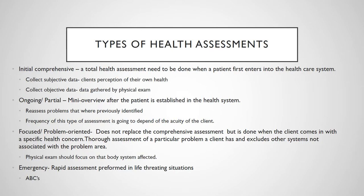Now the different types of health assessments — this is important and will definitely show up on your test, where you'll be given an example and need to identify the type. An initial comprehensive assessment is your total health history and physical assessment done when a patient first enters the healthcare setting — we've never seen them before, have no history or background. We need to collect all subjective data — how they perceive their own health — plus do the physical exam and collect objective data.